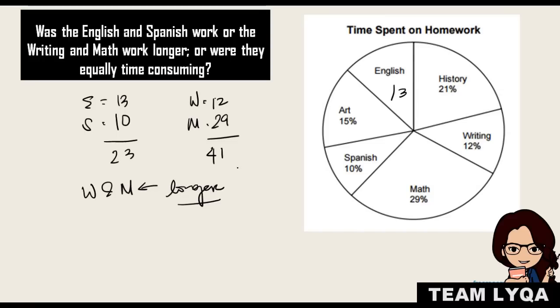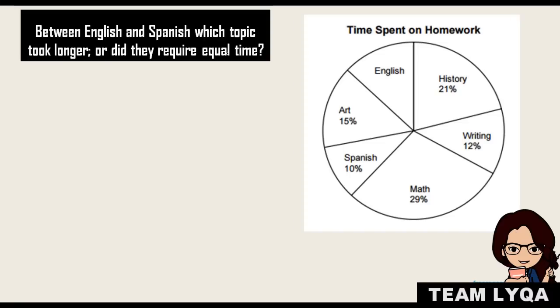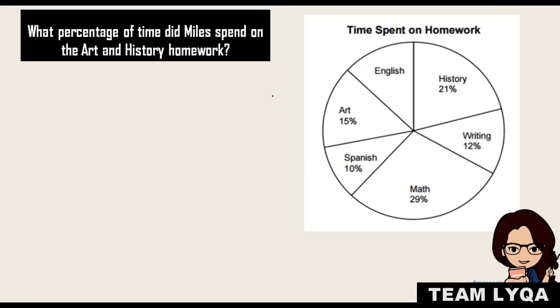Usually for questions like this, the options are in word form. So our answer would be writing and math take longer. Next question: between English and Spanish, which topic took longer or did they require equal time? So again, we said earlier English is 13%, so the answer would be Spanish is greater than English.